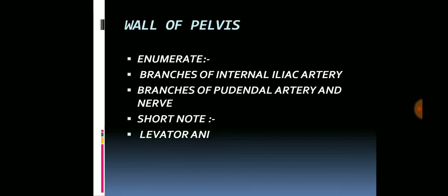Moving on to the wall of the pelvis. The enumerate question comes on the branches of the internal iliac artery — this is surely going to come and is a very important question. The branches of the pudendal artery and nerve are also very important. And a short note can come on the levator ani.